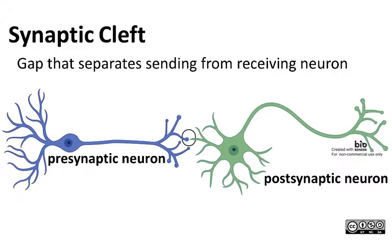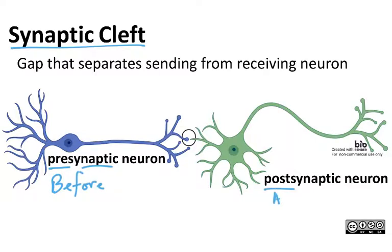A little more vocabulary: the synaptic cleft is the gap between the sending and receiving neuron. The sending neuron is referred to as presynaptic — 'pre' means before. The postsynaptic neuron — 'post' means after — is the neuron after the synapse. So the postsynaptic neuron is receiving and the presynaptic neuron is sending.